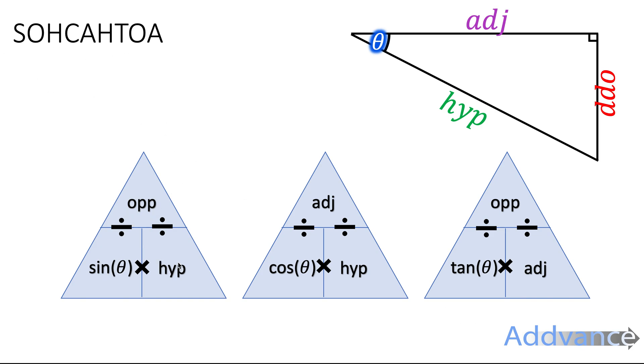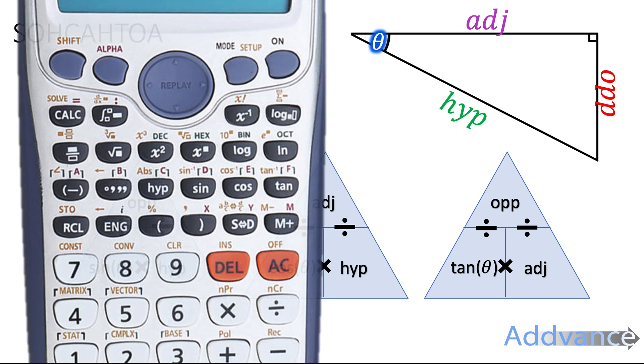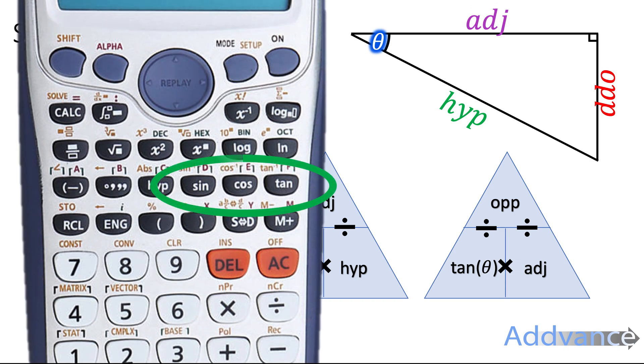Sine opposite hyp, cos adjacent hyp, tan opp adj. And we use these formula triangles like you would in any other subject to find each length of the triangle. And we use these buttons on the calculator here: sin, cos, and tan.